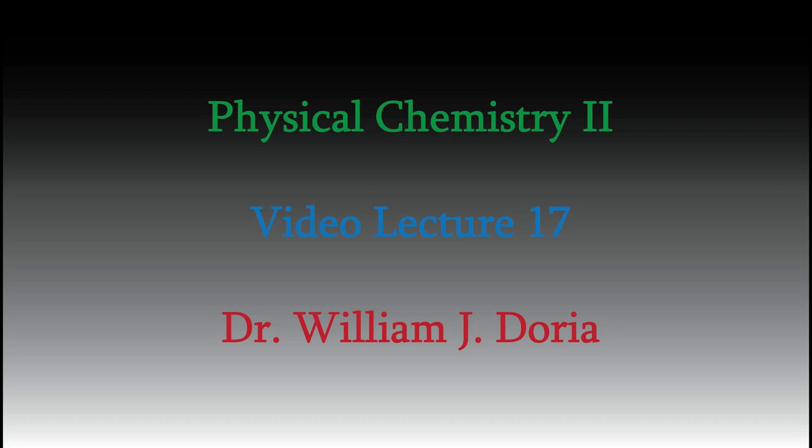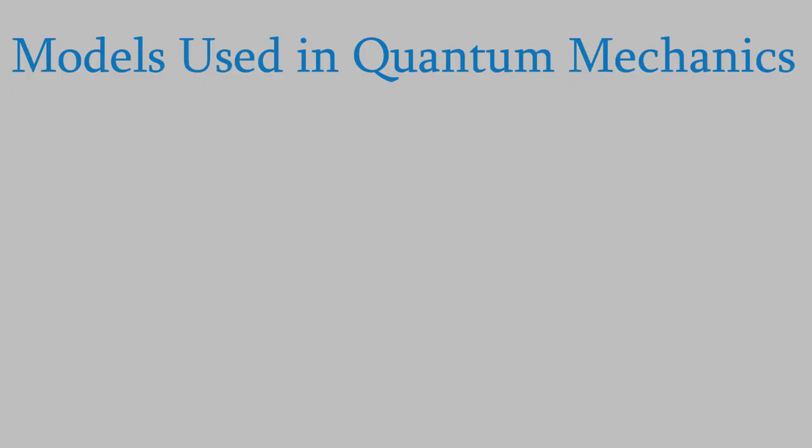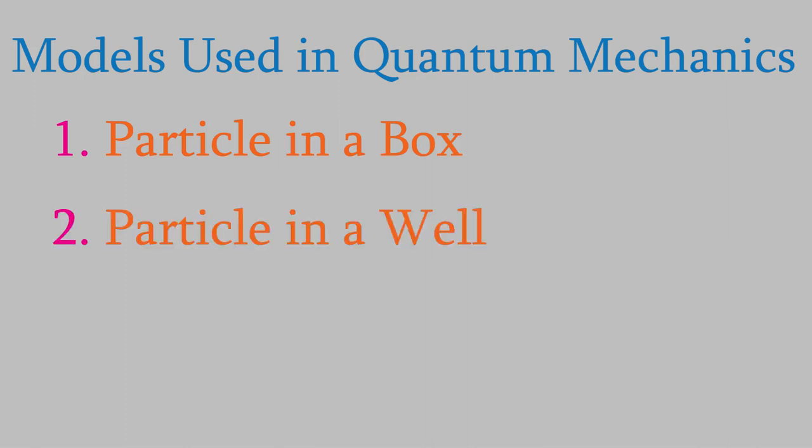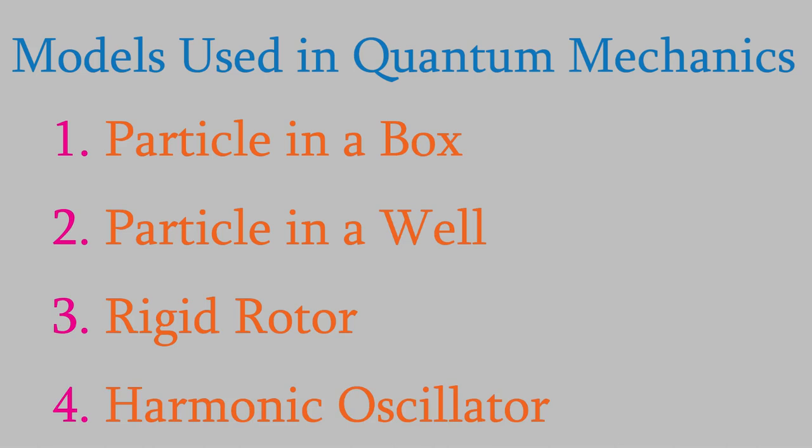Hi, and welcome again to my series of videos for Physical Chemistry 2. Over the course of this semester, we've looked at several model systems. We started with the particle in a box, then moved on to the particle in a well. After that, we looked at the rigid rotor and the harmonic oscillator.